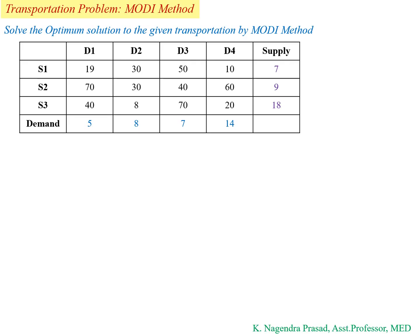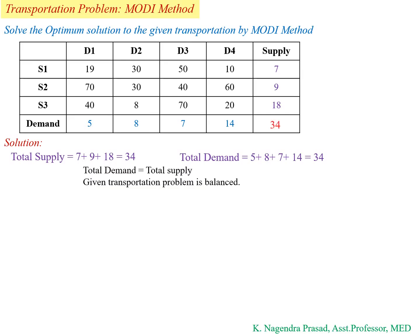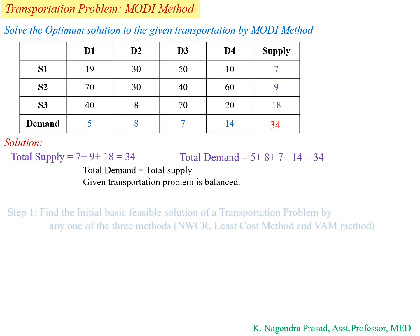First, we have to find whether the given transportation problem is balanced or not. For this, we find the total supply and total demand. Here, total supply is 34 and total demand is 34. Since total supply equals total demand, the given transportation problem is a balanced transportation problem.